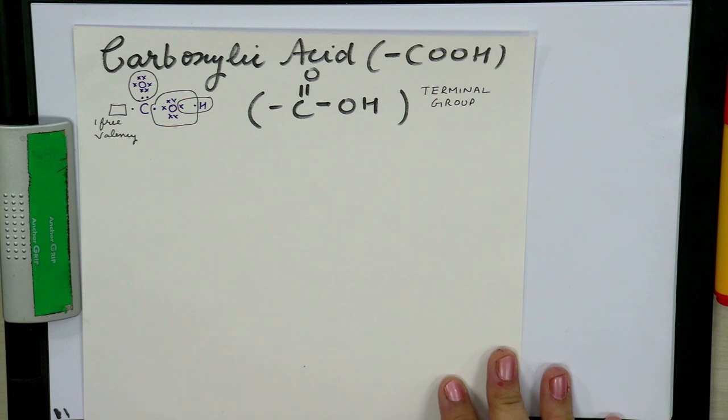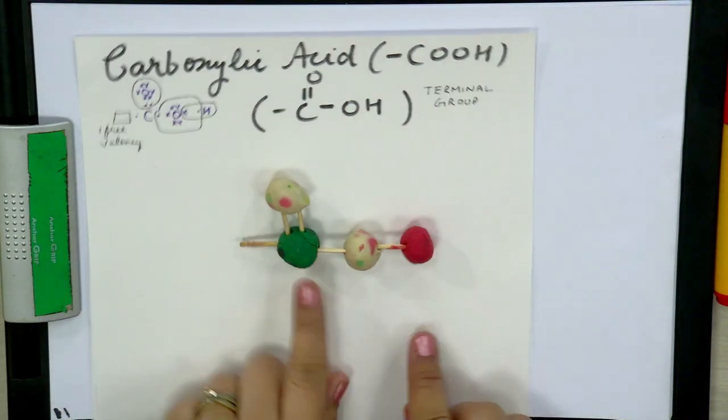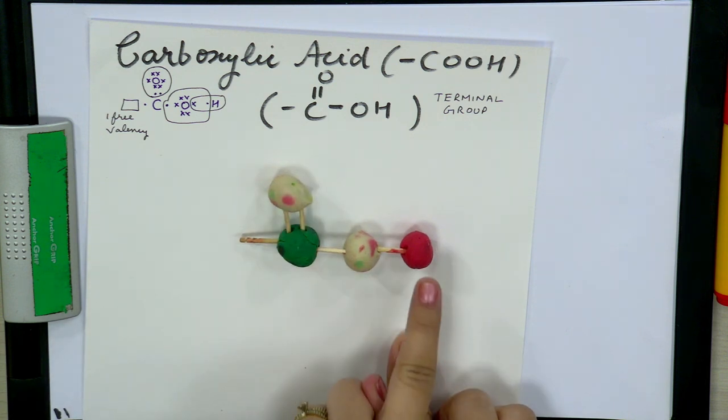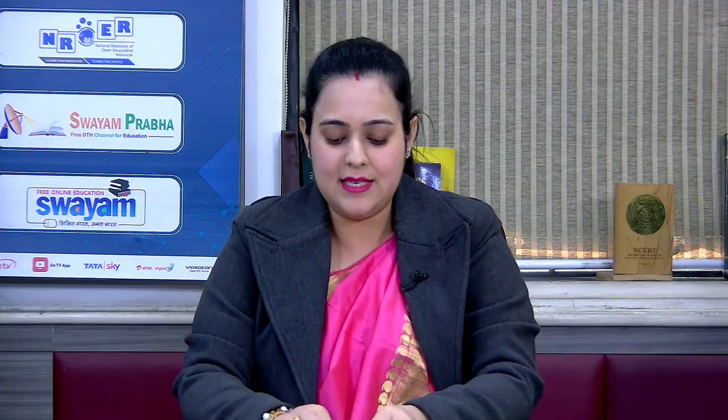Our next functional group is carboxylic acid, represented as C double bond O-OH. In three dimensions it looks like this structure, and in two dimensions we represent it as shown. In the clay model, the green ball is carbon, then two oxygens and a hydrogen. To make the first member, we cannot put oxygen (valency is two) and cannot put carbon (that gives the second member), so we simply add hydrogen.